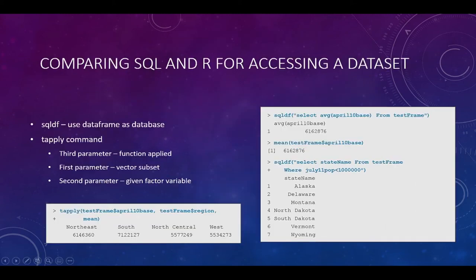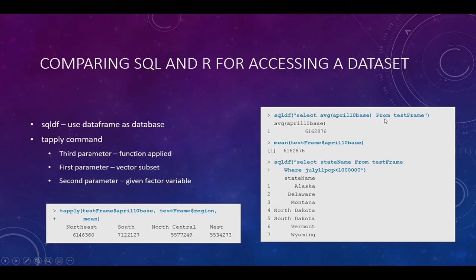Let's compare using SQL and R. There is a function called `sqldf` — like SQL DataFrame — that allows you to use a data frame as a database, querying it as if it were a database. For example: `sqldf('SELECT AVG(April_10_base) FROM test_frame')` — select the average of the April 10 base from the test frame. You can do all kinds of SQL commands on it, such as `SELECT state_name FROM test_frame WHERE July_population < value`. Instead of saying FROM table, you're saying FROM data frame.